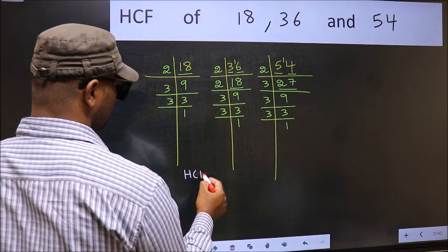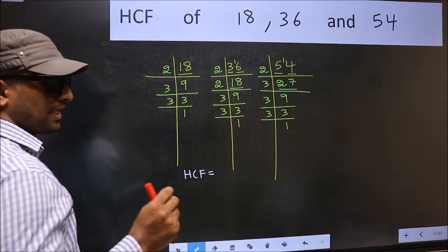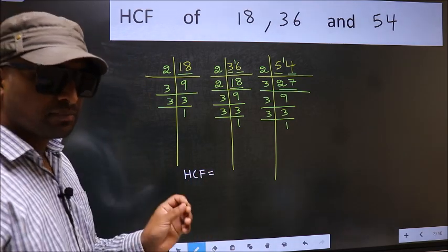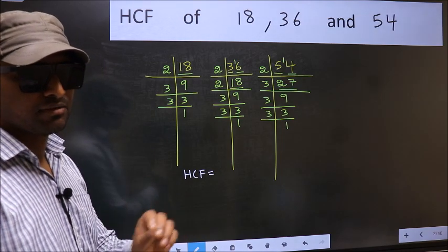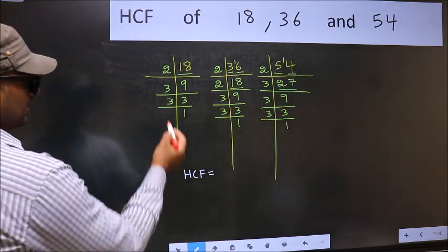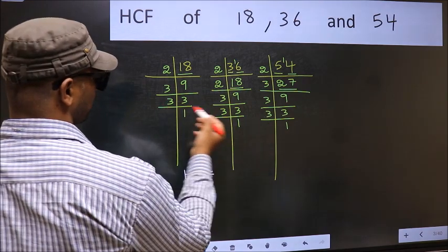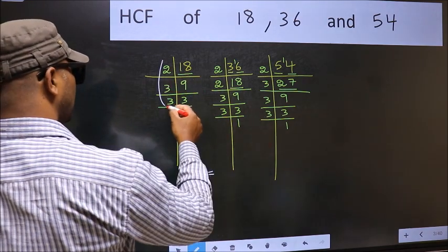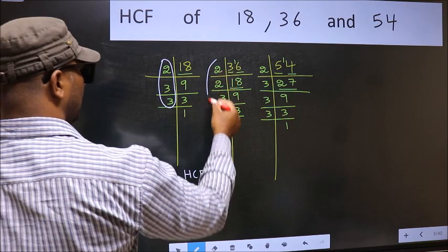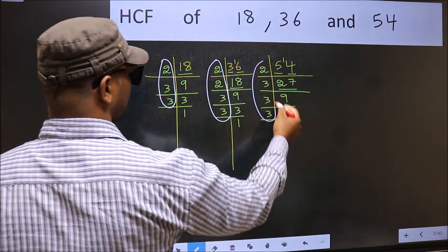Therefore, HCF is the product of numbers which should be present in these 3 places, that is here and here and also here.